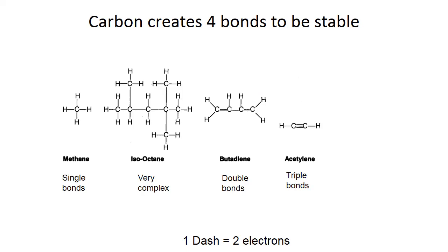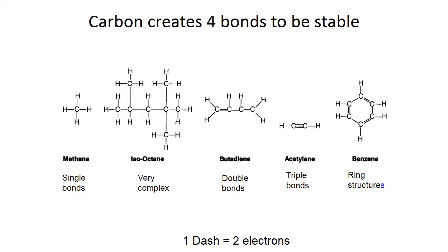Here's a triple bond — three dashes — these are very, very strong bonds. Pick either carbon: the one on the left has four dashes attached, equaling eight electrons, so the carbon is stable. Carbon will also form ring structures, and again any carbon in the ring has four dashes attached — four dashes equals eight electrons — so that carbon and all the others are stable.